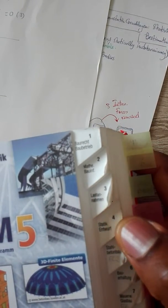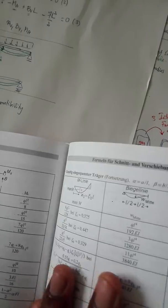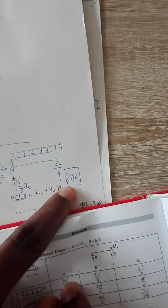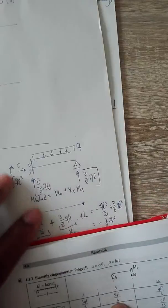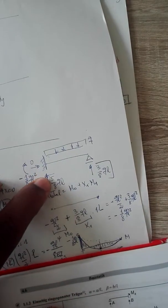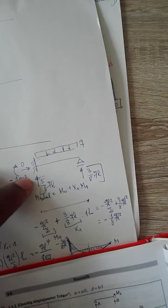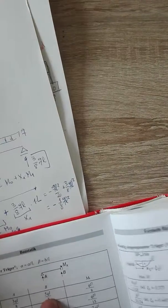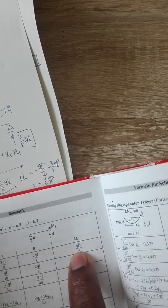All those values — 3/8, 5/8, and 1/8 — can be checked in the reference tables, which I'm not going to do because they're correct. Looking at the static summary: the A support has 3/8 qL, the B support has 5/8 qL, and the moment is -1/8 qL², meaning the tension side is above. Everything is correct.